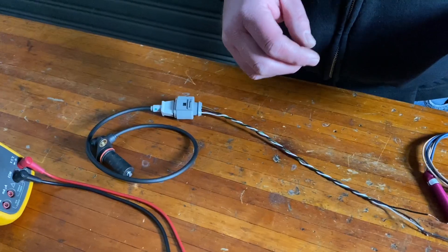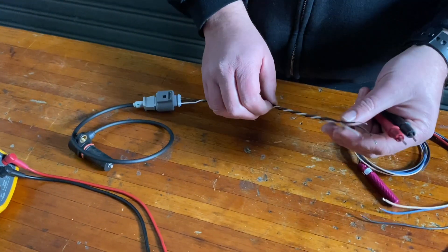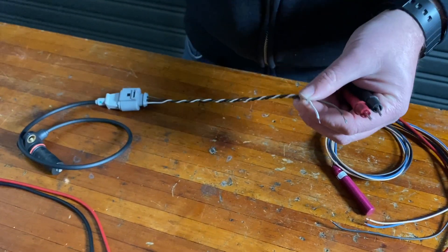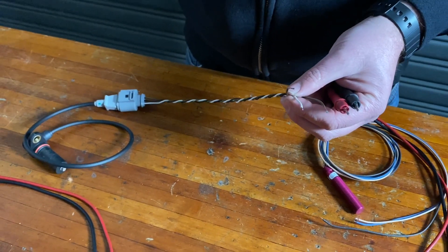Put your multimeter on ohms. We need to get a reading between any two of these three wires. We need to get a steady reading of ohms.